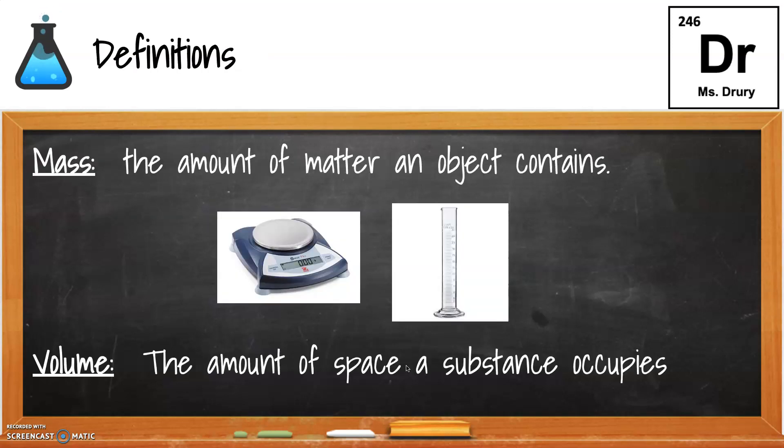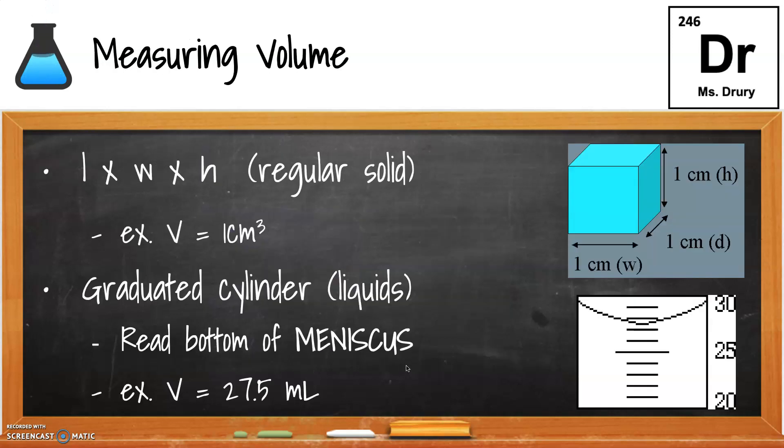First, we should make some initial definitions based on some labs we've done. The mass is the amount of matter in a subject, so how many particles it has, and we usually use a balance like the one on the left to find the mass of substances. And the volume is the amount of space it takes up, so we usually use a cylinder or a ruler to figure out what the volume of a substance is.